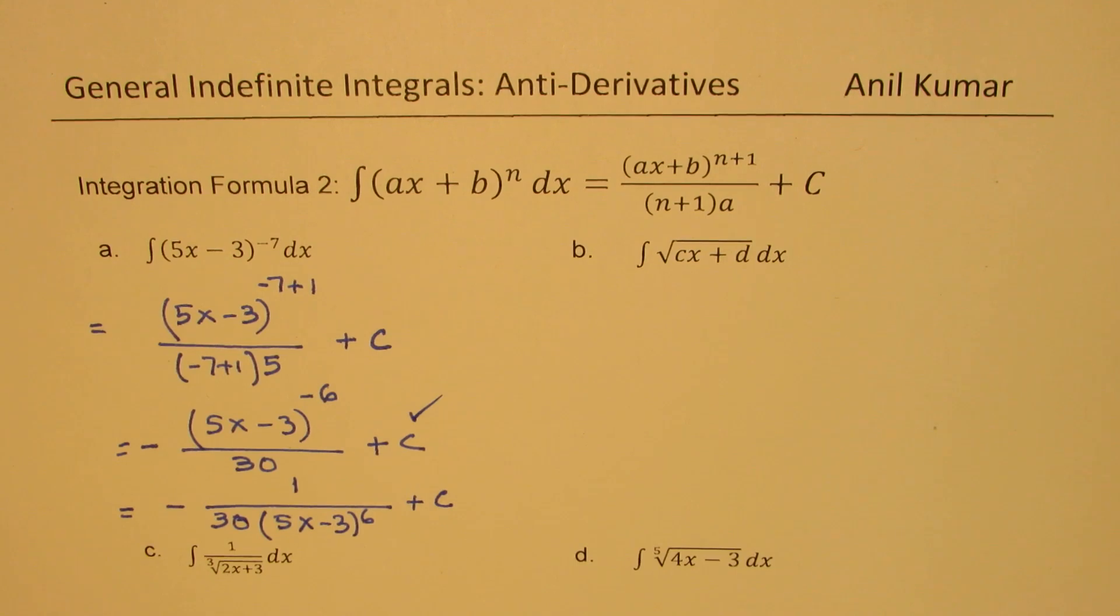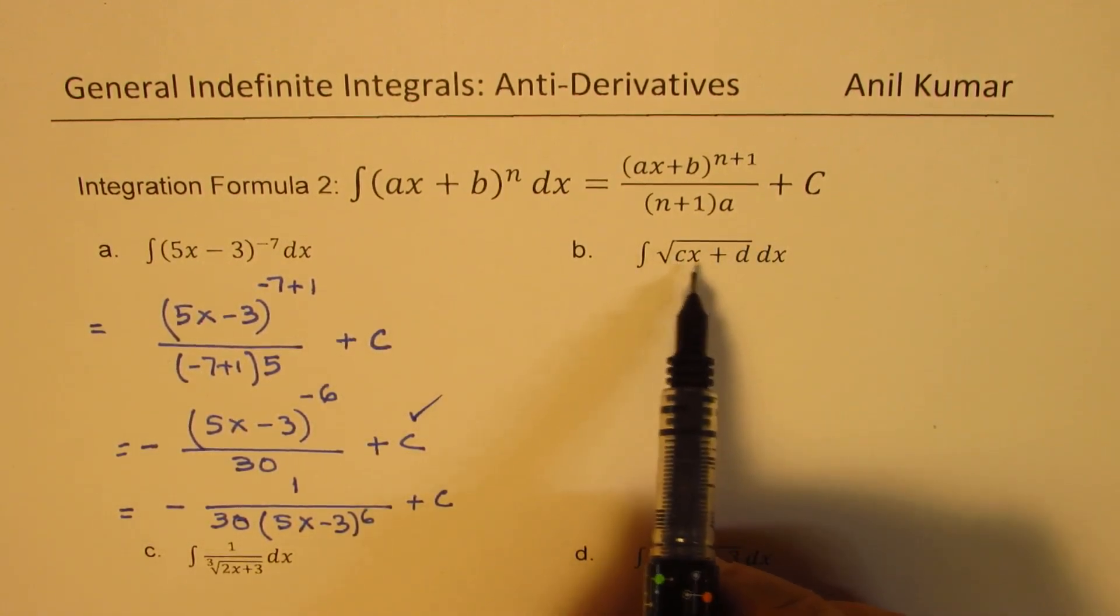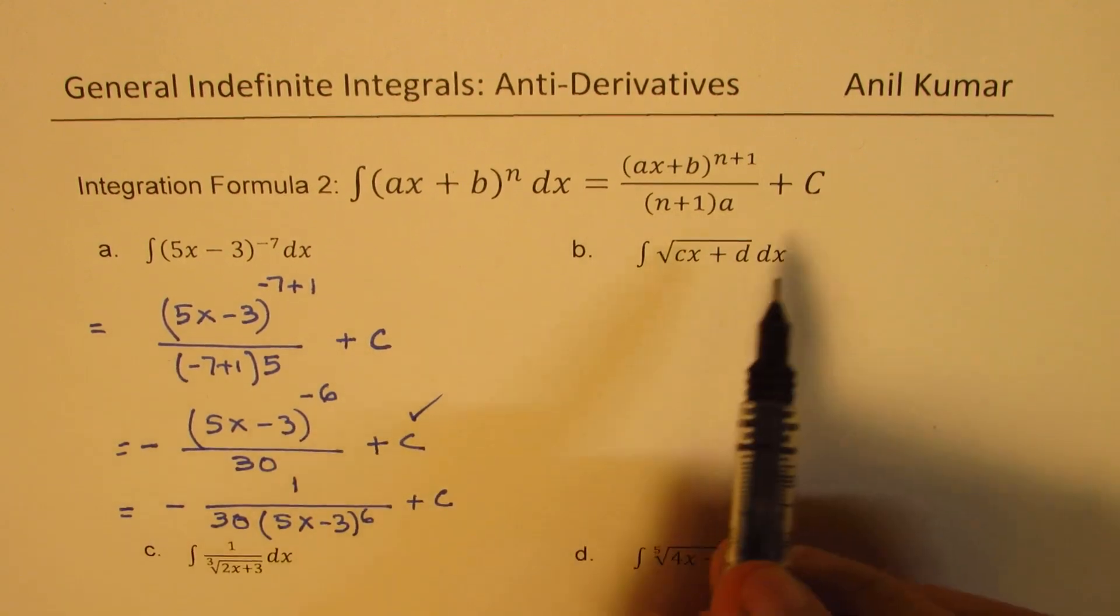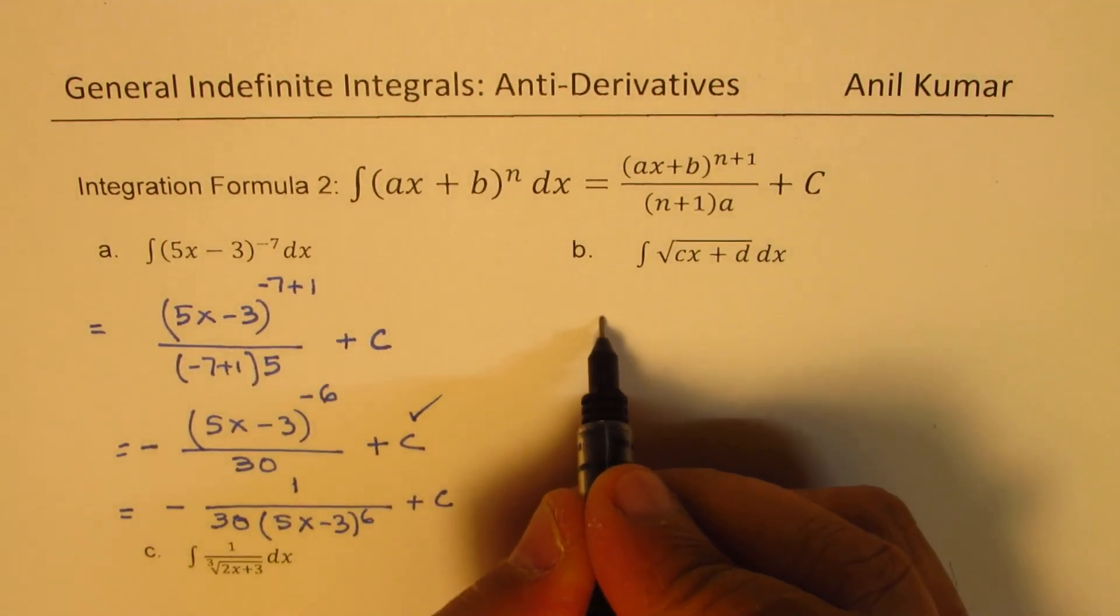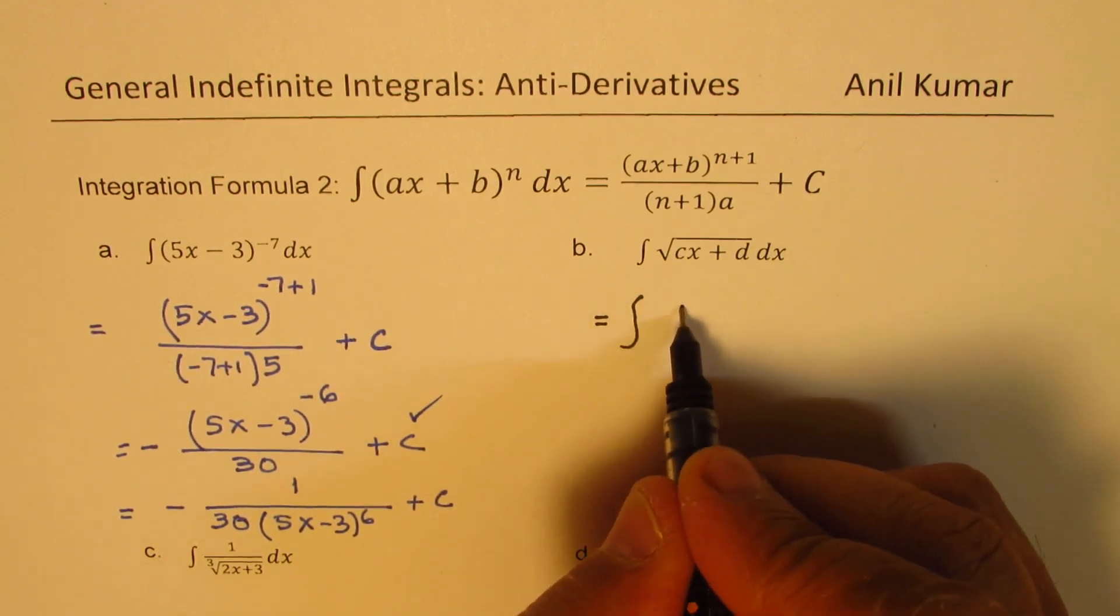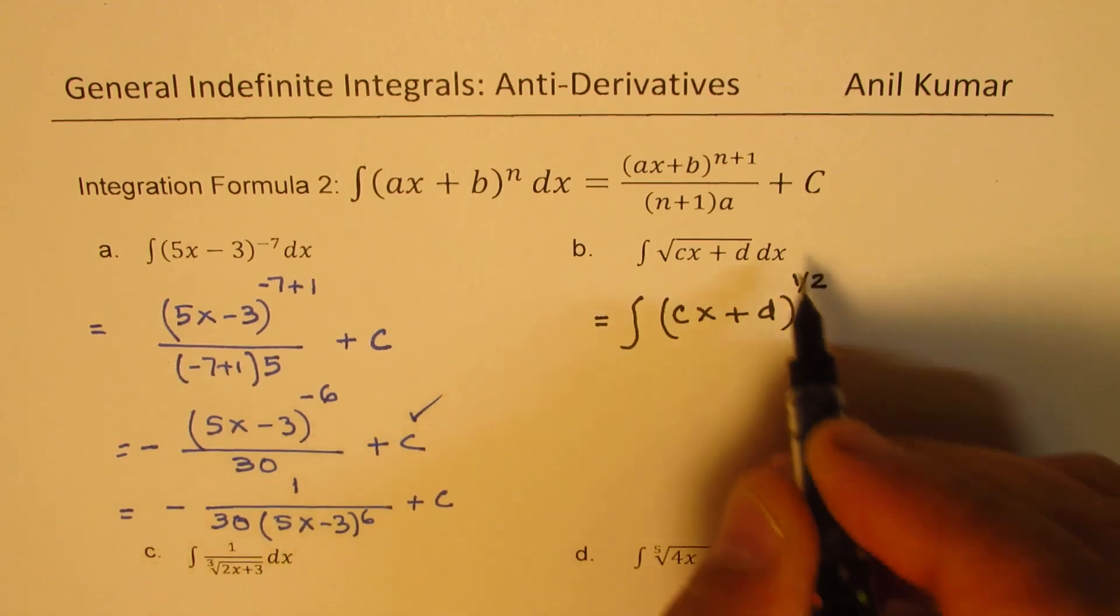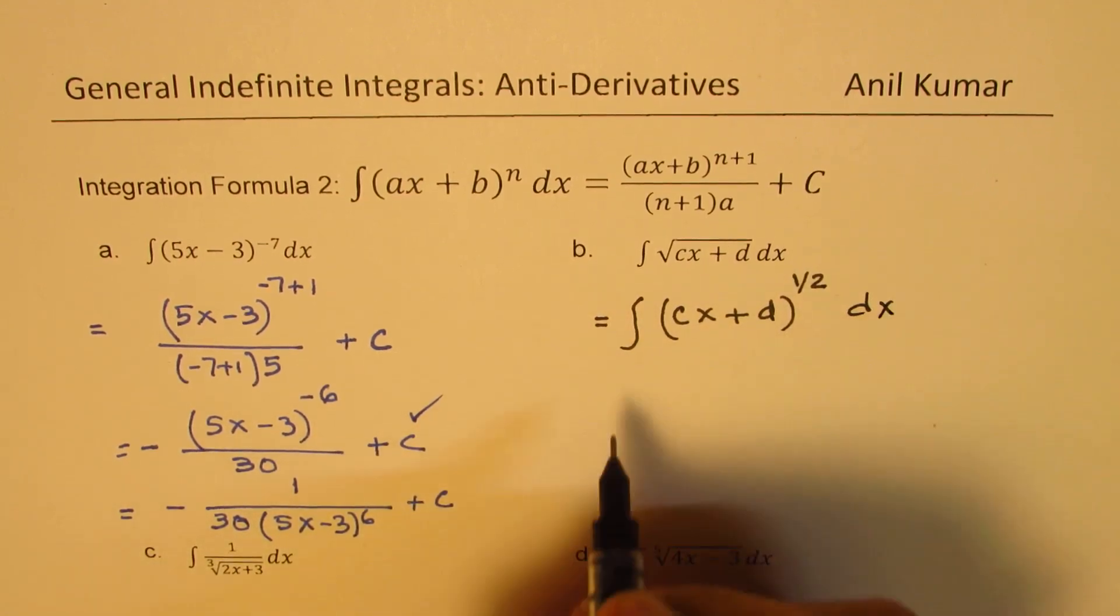Let's take up the next example here, which is integral of square root of cx plus d dx. We have taken a very general function. Any square root can be written as a power of half. So I could write this as cx plus d to the power of half dx.